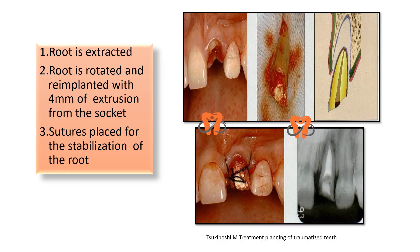To illustrate with a case: here you can see a complicated crown-root fracture with hardly any crown structure visible and a fracture extending deep subgingivally. The root was extracted, rotated, and re-implanted in the socket with 4 mm extrusion — meaning it was pulled out 4 mm and re-implanted in this new position. Sutures were given for stabilization. The radiograph shows RCT has been completed and the root has been extruded outside.